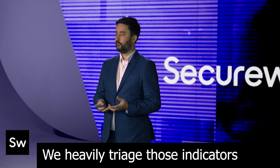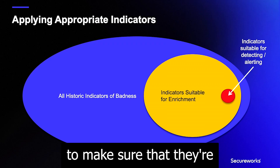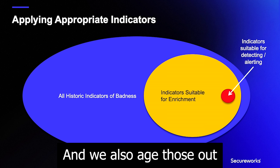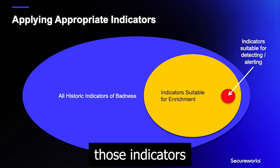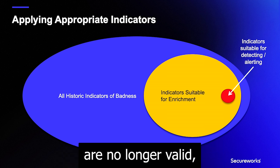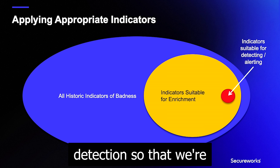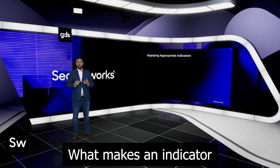We heavily triage those indicators to make sure that they're appropriate for detection, and we also age those out very quickly. When we think those indicators are no longer valid, we remove them from detection so that we're not creating false positives.